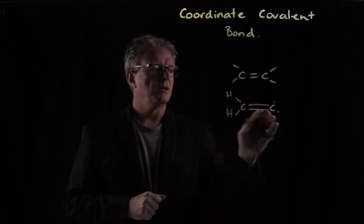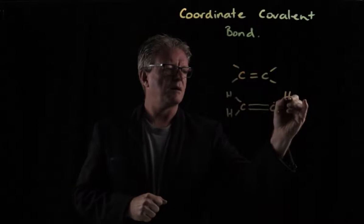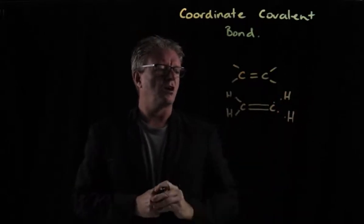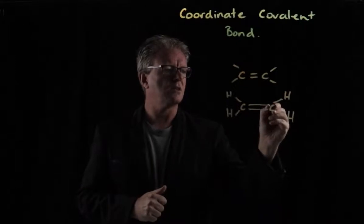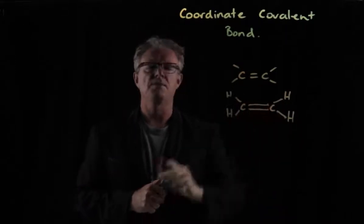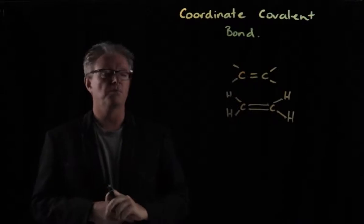But then we have to do the same for the other carbon over here. So we've got two other hydrogens there, those two share. And so this carbon here has got one, two, three, four, five, six, seven, eight. And we called that a normal covalent bond.